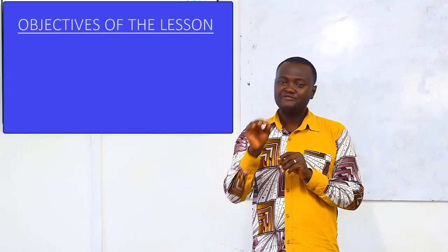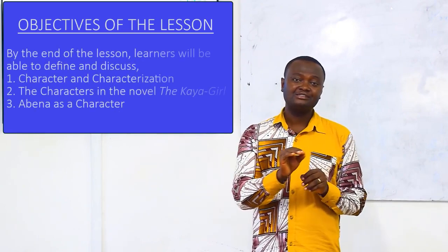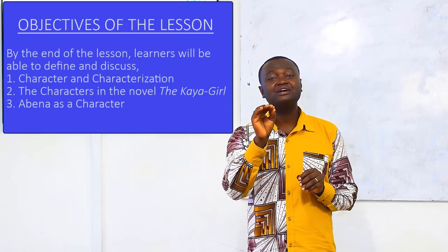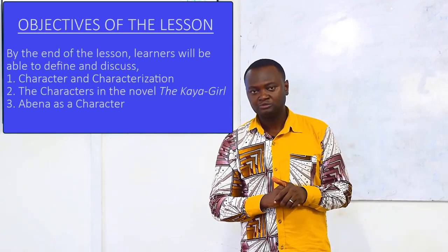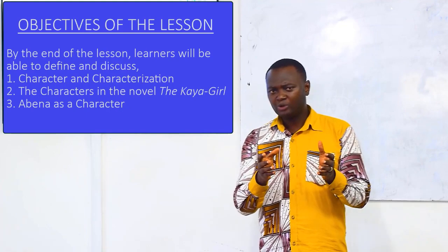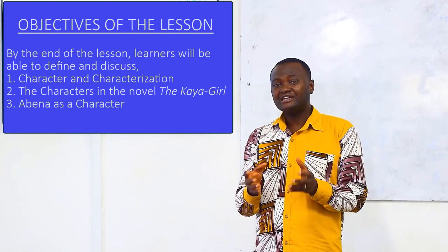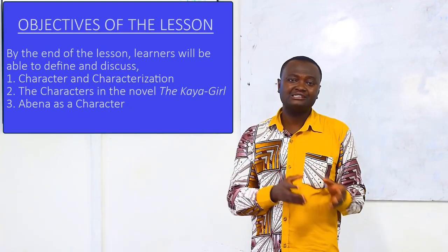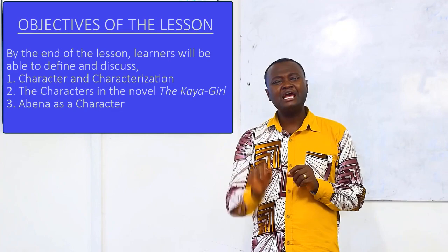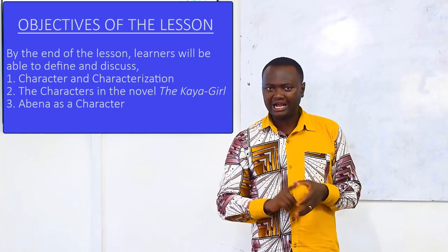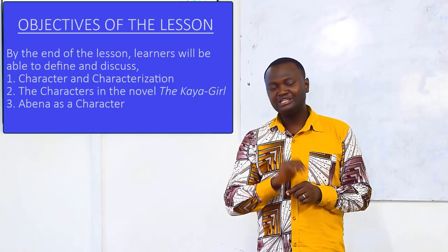The first is characters and characterization in the novel. We would also explore and identify some characters in the novel and talk about a particular character, Abner, in the novel.